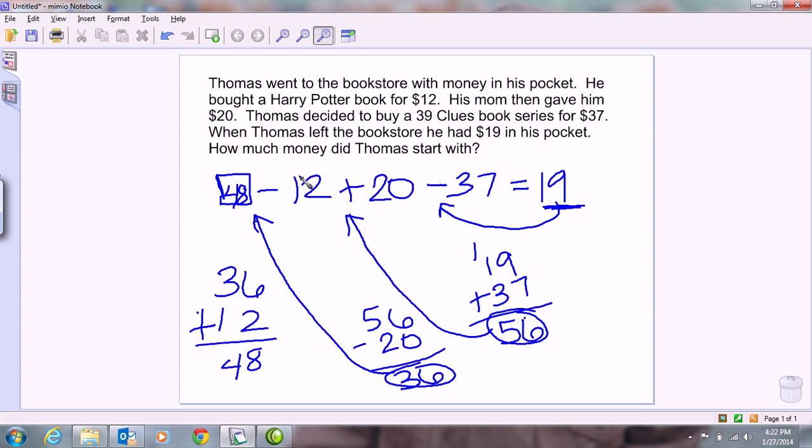We would do 48 minus 12 and get 36. We do 36 plus 20 to get 56. And 56 minus 37, which would give us 19. And you know that if you don't end up with 19, you probably went wrong somewhere. So your quiz is going to have two questions that are very similar to this.